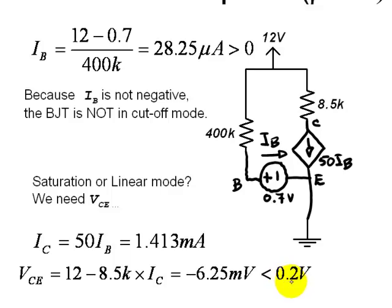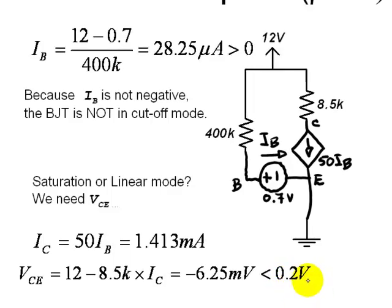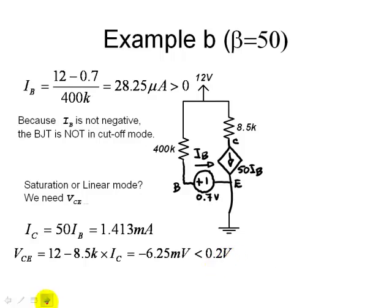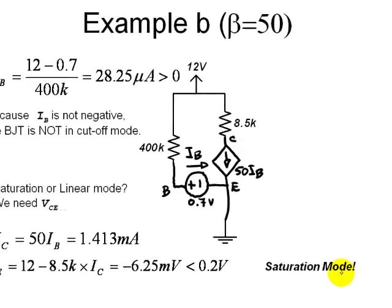It's less than 0.2V, which is impossible. That is telling us in loud, loud words that it's in saturation mode. The transistor, the BJT in disguise, is in saturation mode.